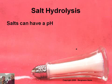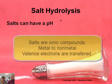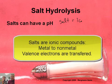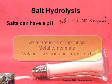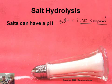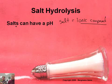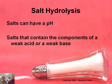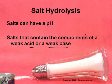Salts can have a pH. Some salts. So what's a salt mean? A salt is an ionic compound — salt equals ionic. Now, some do and some don't. So like your typical table salt, NaCl, sodium chloride, pH 7 — it does not have a pH. But some salts can. Salts that contain the components of a weak acid or a weak base have a pH other than 7.